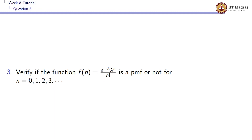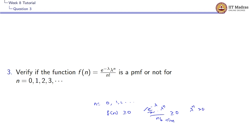First, for each value of n = 0, 1, 2, 3, and so on, f(n) should be greater than or equal to zero. That means e^(-λ) · λ^n / n! ≥ 0. We know that e^(-x) is always positive, and n! is always positive, so λ^n must be greater than zero for all n. For this to hold, λ must be greater than or equal to zero. Only if λ ≥ 0 will f(n) ≥ 0 for every n.